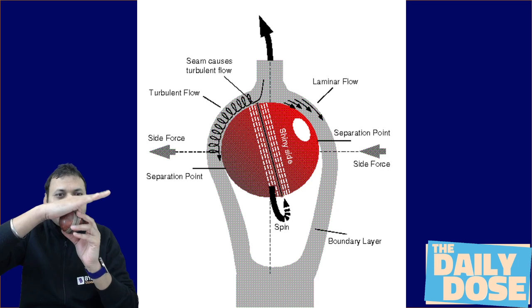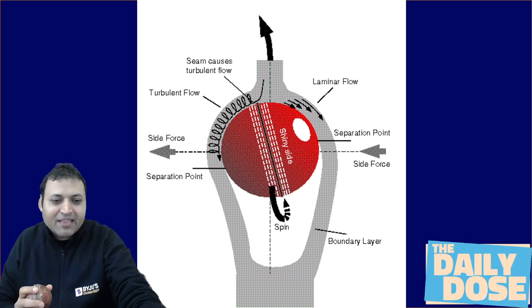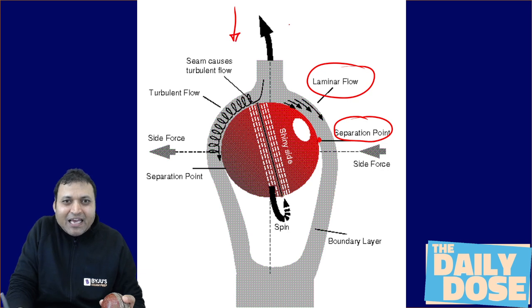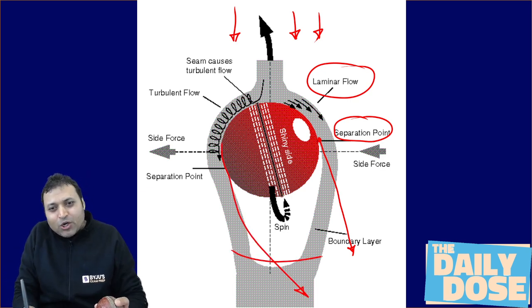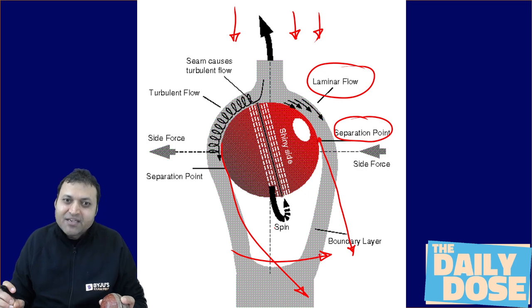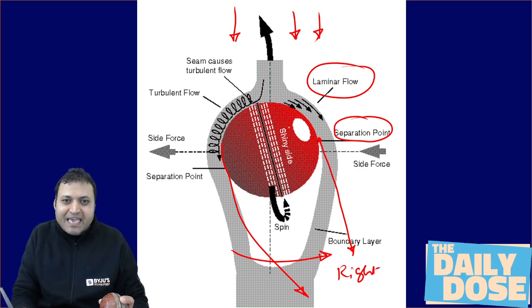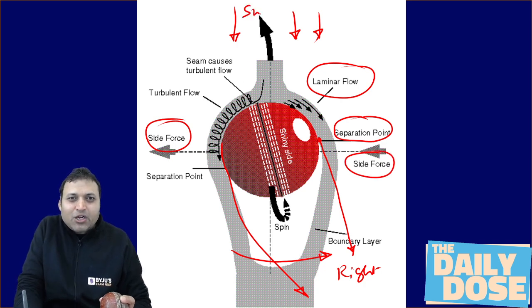On the other hand, on the side which is smooth or shiny, the boundary layer becomes laminar, and in case of a laminar boundary layer, the separation of the flow comes early. So the air separates early on the smooth side and late on the rough side. This means air moves towards the right-hand side due to the different points of separation. Newton's third law says there is a force on the ball opposite to the force on the air, so the ball swings towards the left-hand side.